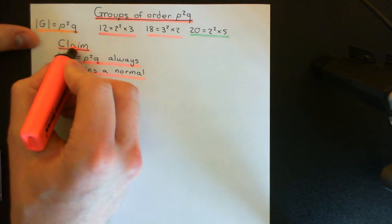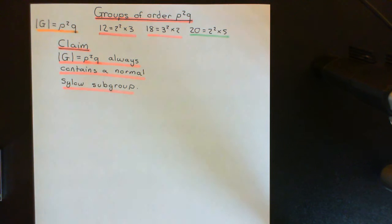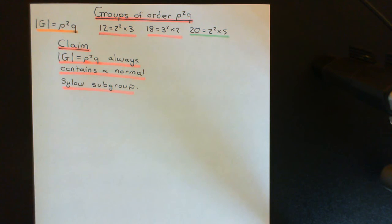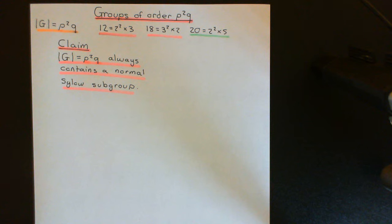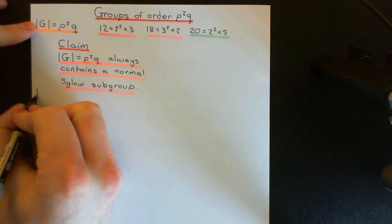So it always contains a normal Sylow subgroup — at least one; it might contain more than one. And therefore, we can instantly conclude that any group of order p squared times q is not a simple group, because here is a normal subgroup that is neither the improper subgroup nor the trivial subgroup. So let's begin the proof of this result.